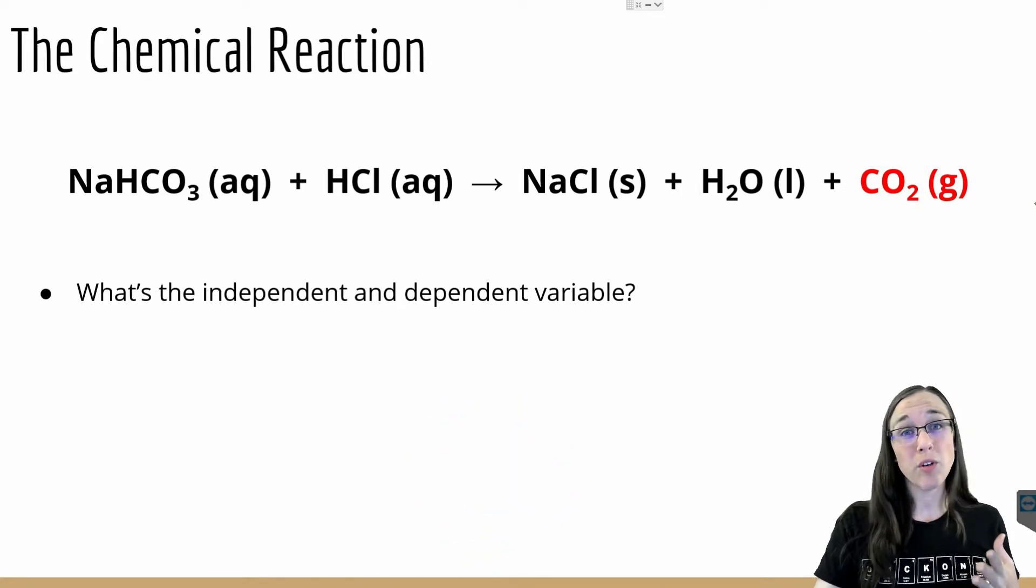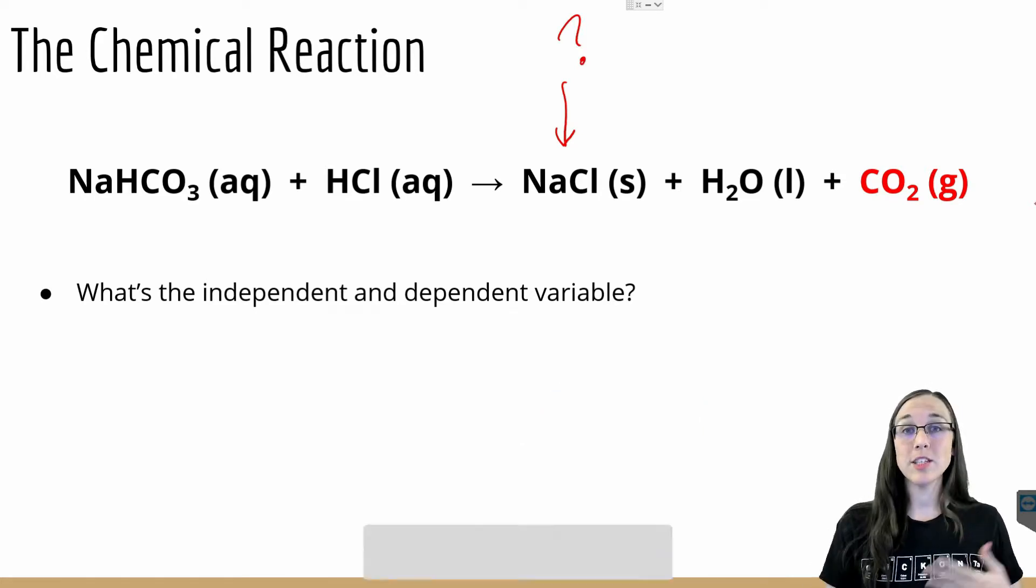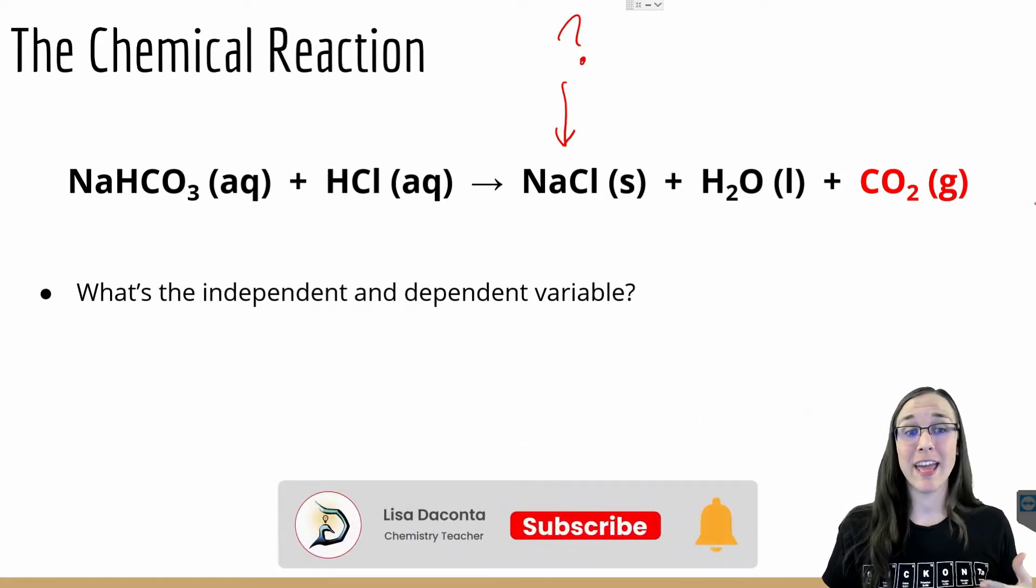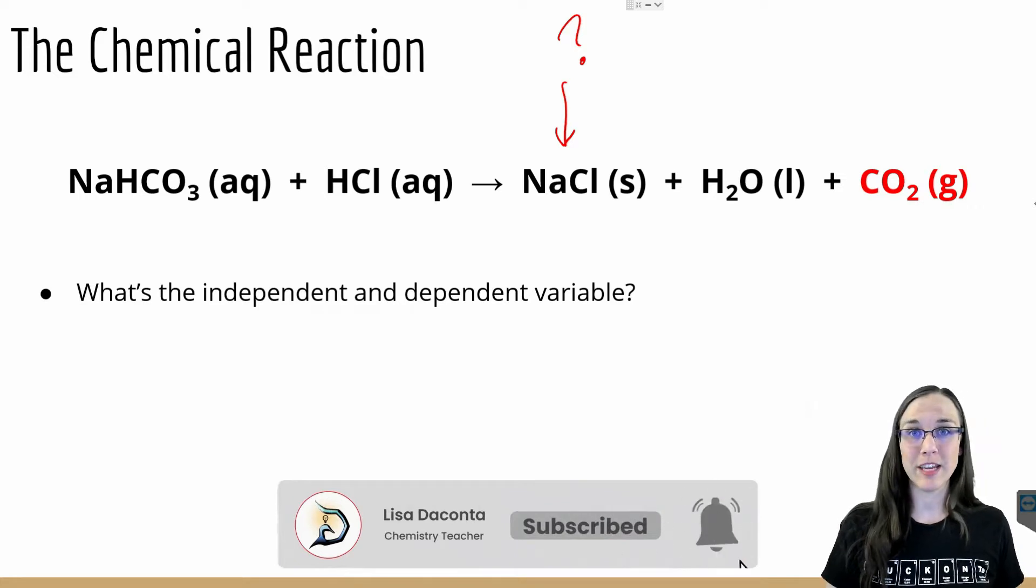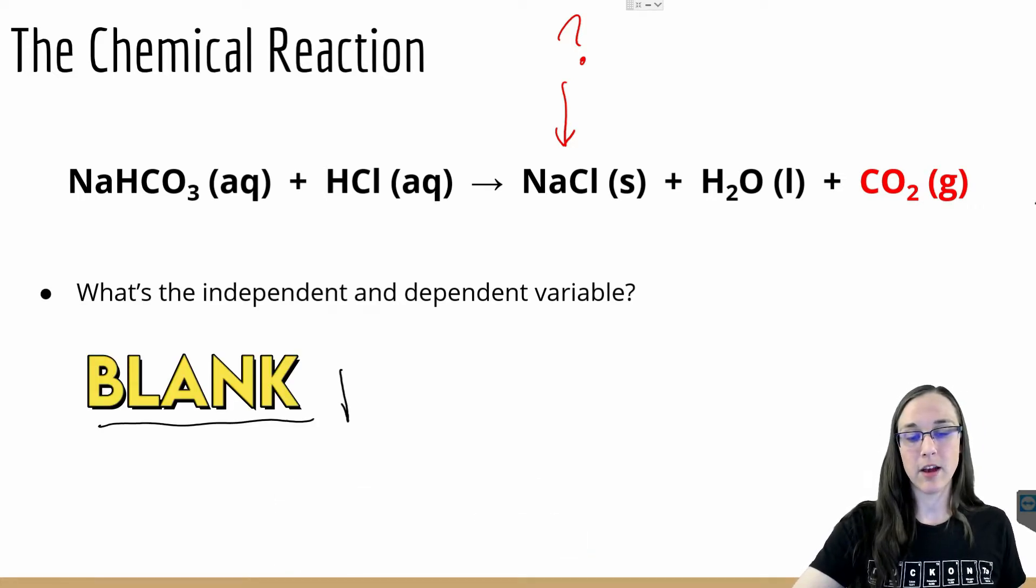Now for this experiment, the overall goal is to figure out how much table salt, NaCl, can we make as our final product. So anytime we are identifying an independent and a dependent variable in chemistry, we want to follow the following format: blank depends on blank.